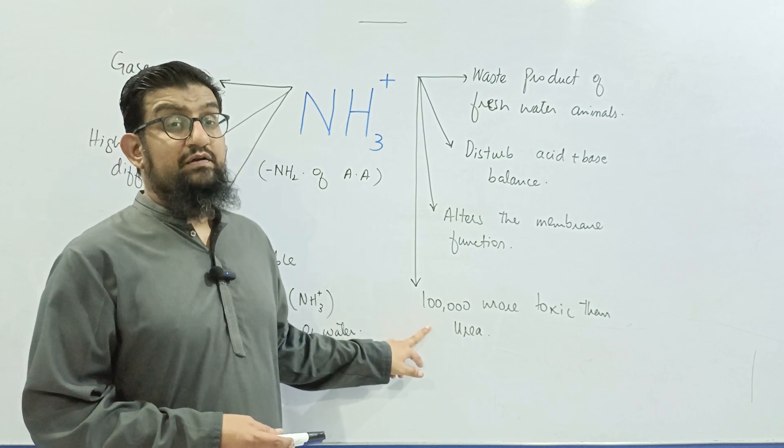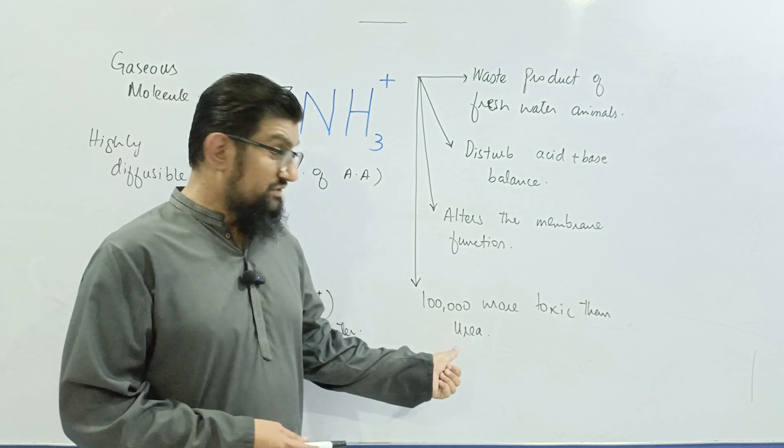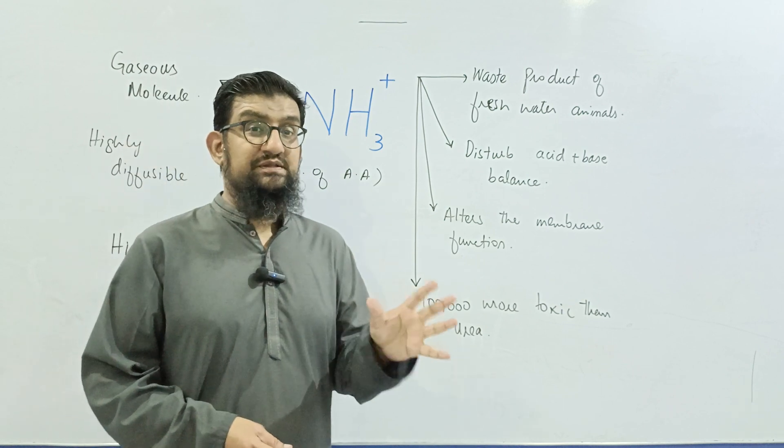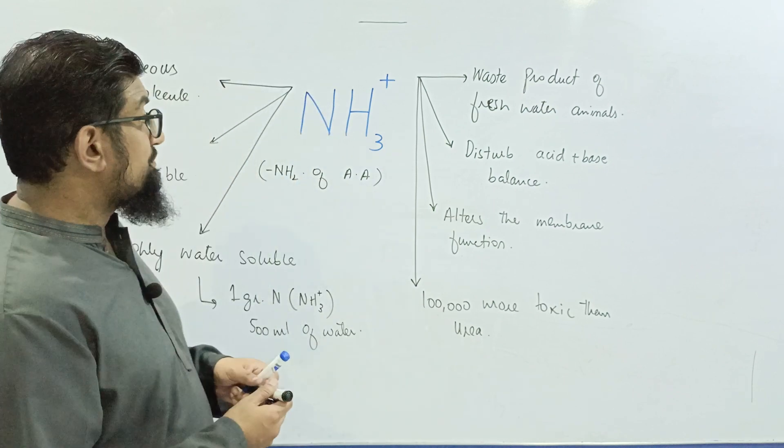Now ammonia is so toxic that it is 100,000 times more toxic than urea. And you know, urea is still toxic enough to kill a person if kidneys are not removing urea from our body.